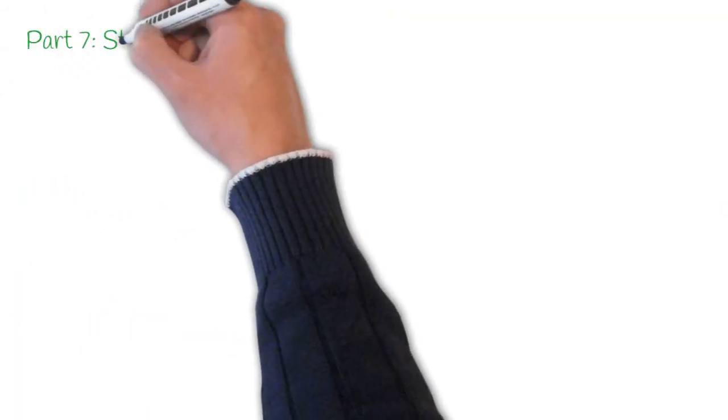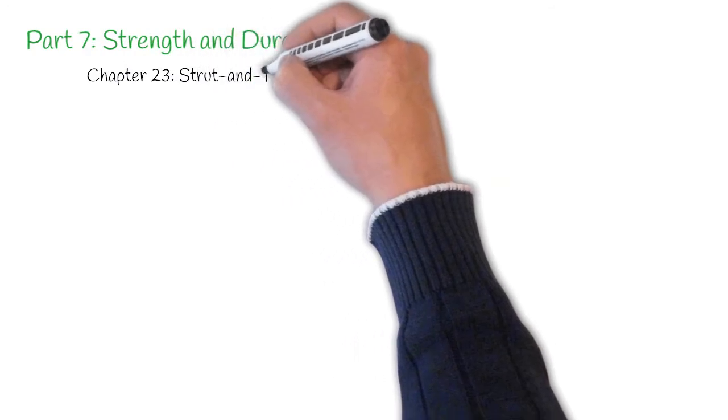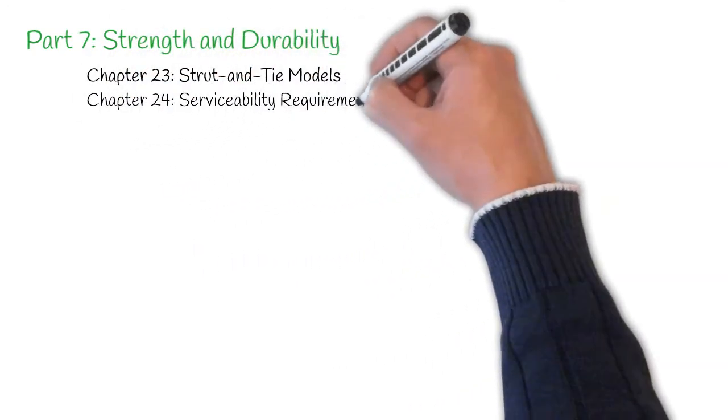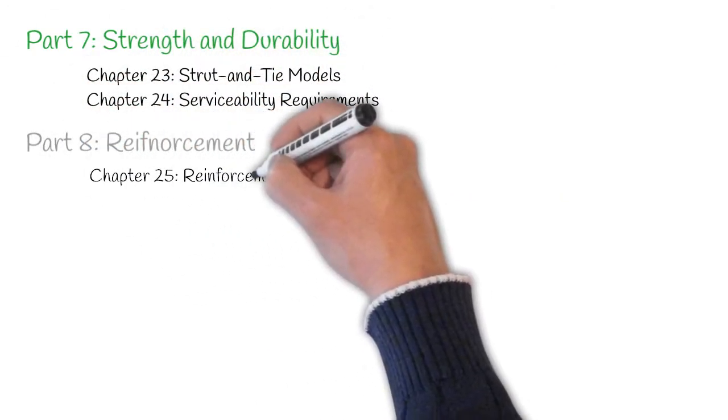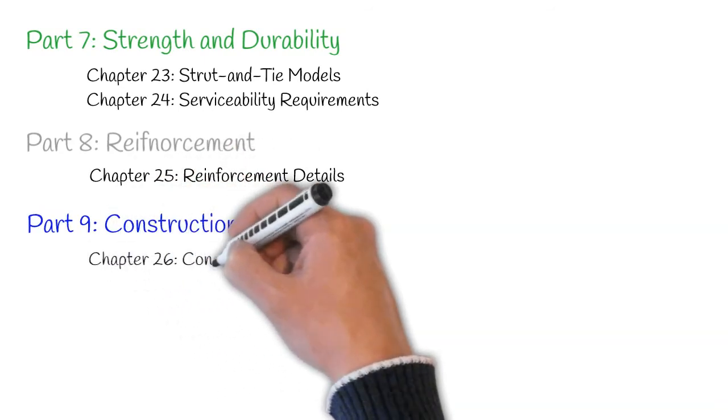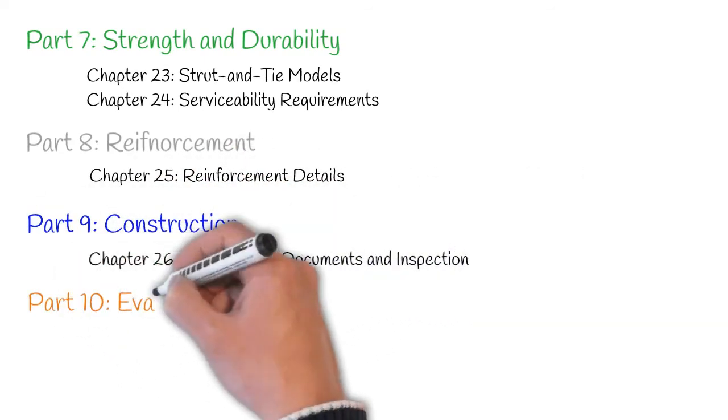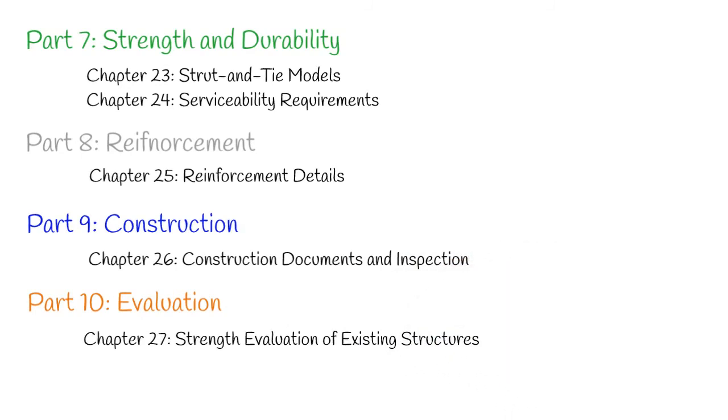Strength models and serviceability requirements are included in Part 7. Parts 8, 9 and 10 have 1 chapter each and cover reinforcement detailing, construction documents and inspection, and strength evaluation of existing structures. I hope this overview will help you navigate through ACI 318 Building Code.